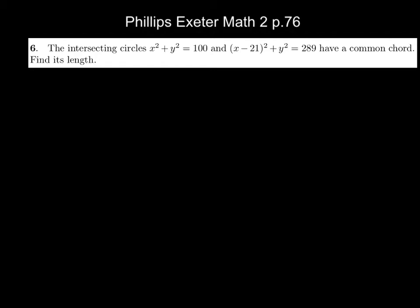So what do you know about these circles? The radius of the first circle is 10, and its center is at the origin (0, 0). The second circle is centered at (21, 0), and it has a radius of 17, because the square root of 289 is 17.